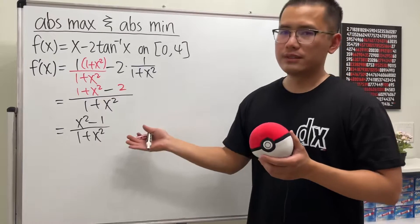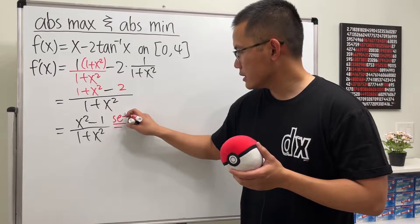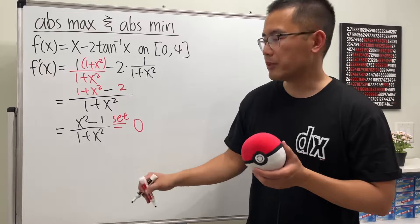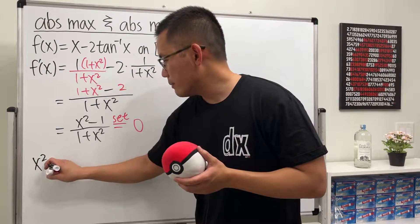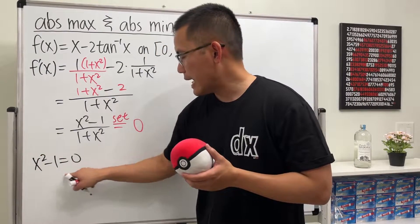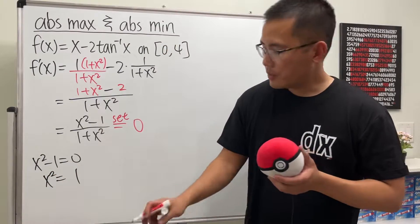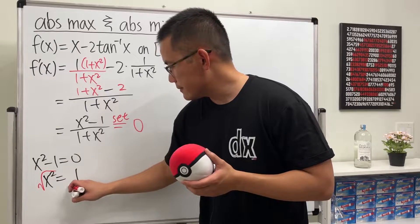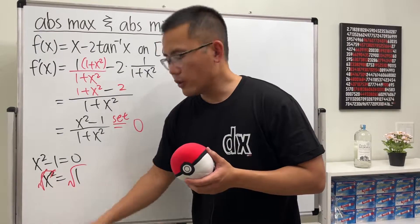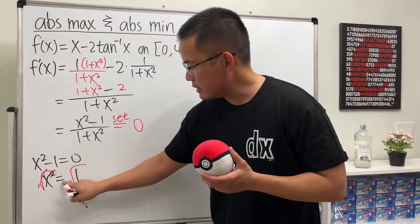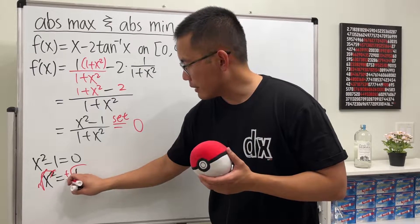And then now we can set this to be 0. We just have to make the top equal to 0. So x squared minus 1 equals 0. Add 1 on both sides. x squared equals 1. And now we take the square root on both sides. And usually when we take the square root on both sides, we would need to put a plus or minus.